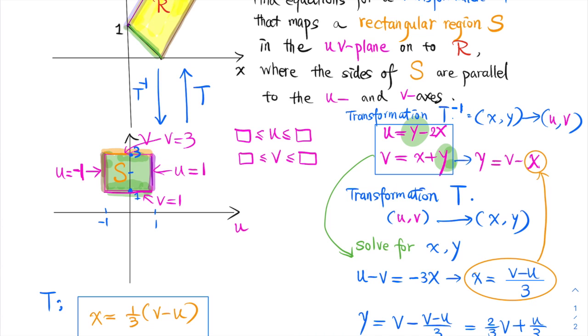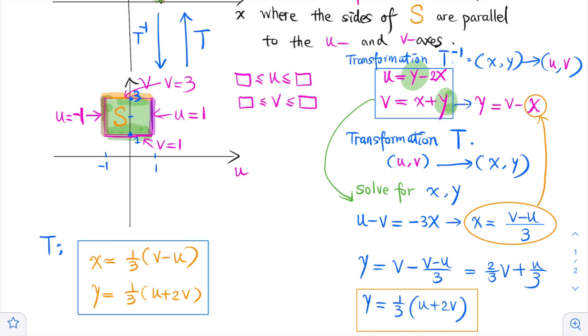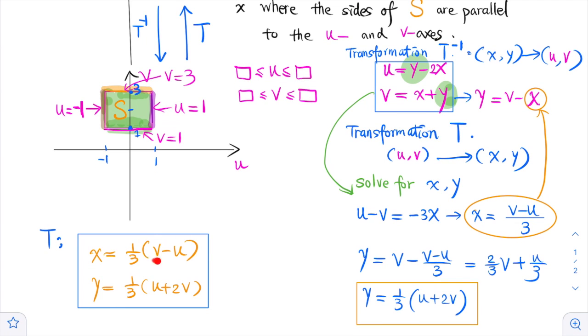region to region R is X equals 1 third times the quantity V minus U and Y equals 1 third times the quantity U plus 2V.